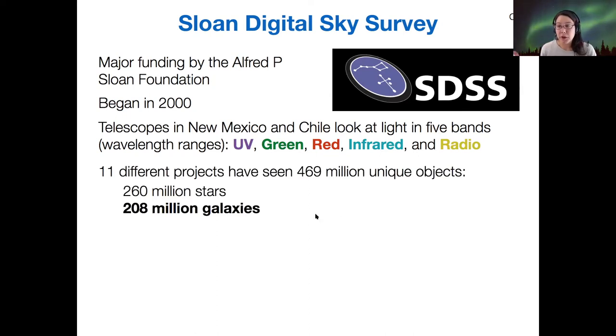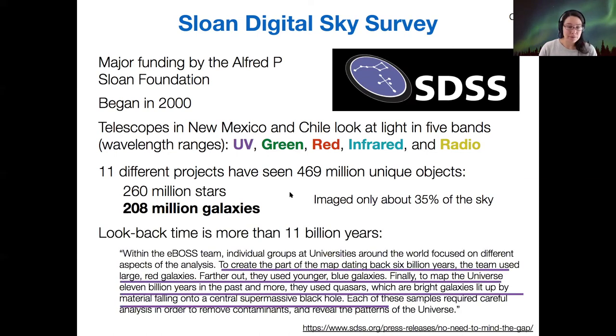They've looked at many millions of stars and galaxies within their different projects. This is only about 35% of the sky, so there's still a lot of surveying that could be continued. The whole lookback time that they can get to is more than 11 billion years.